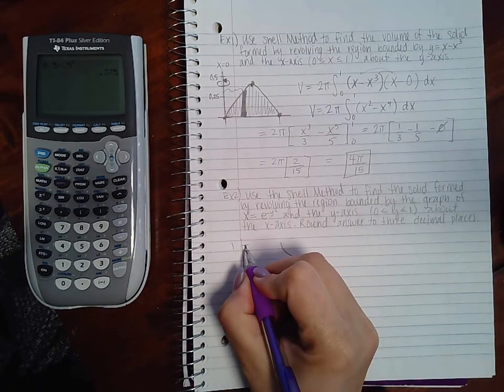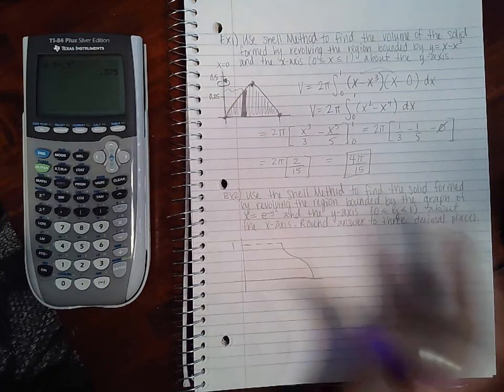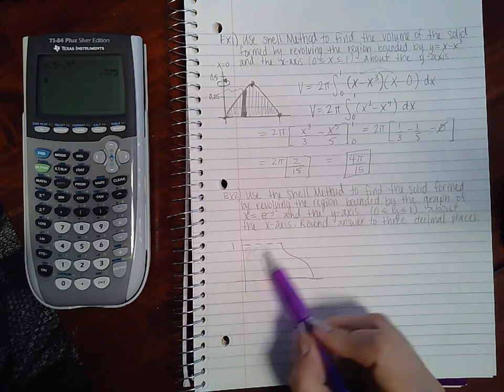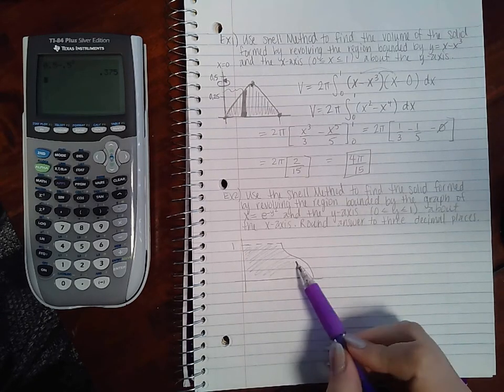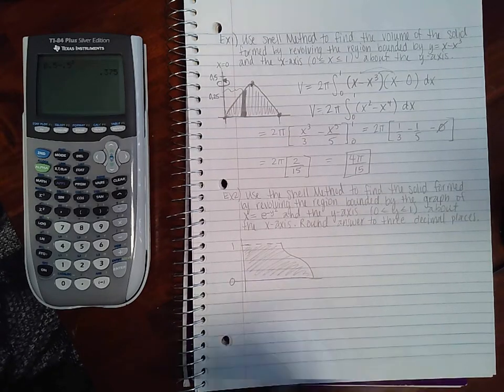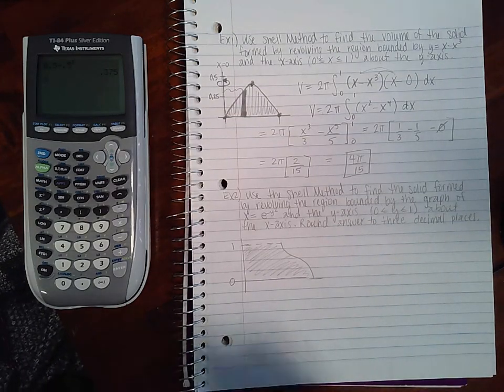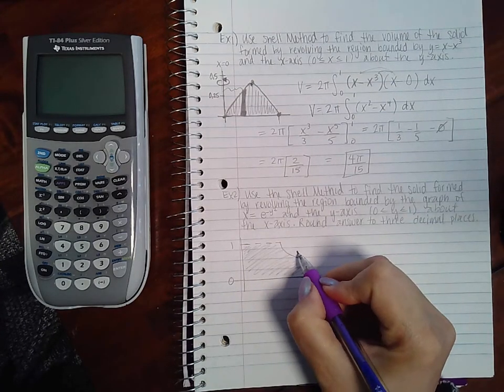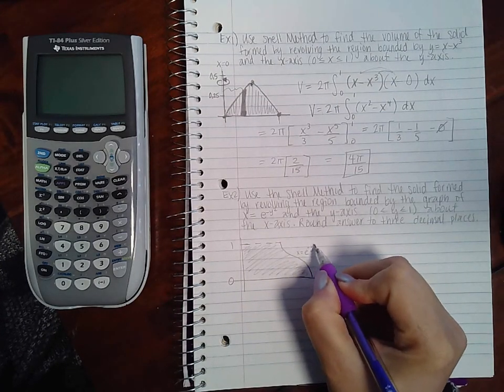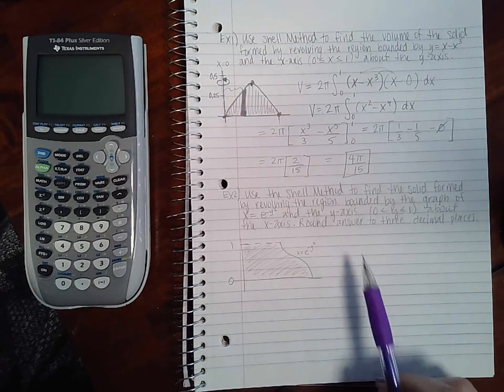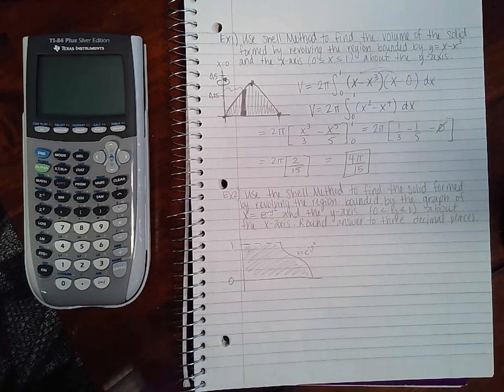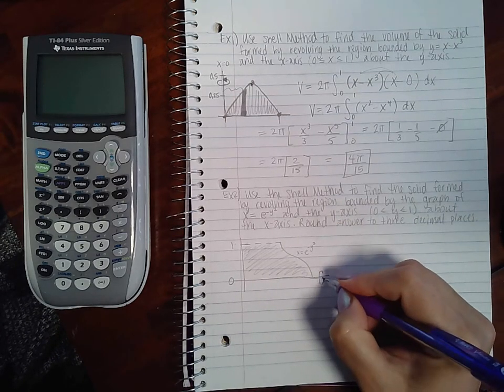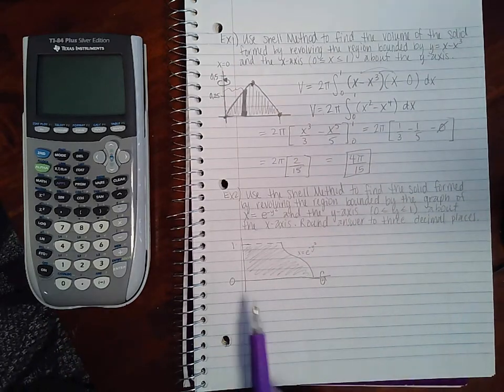It was my mistake for not drawing it, but the graph does look something like this. This was one of the ones where they do in fact give you the region. So this is the graph that they give you, and this is the graph of x equals e to the negative y².